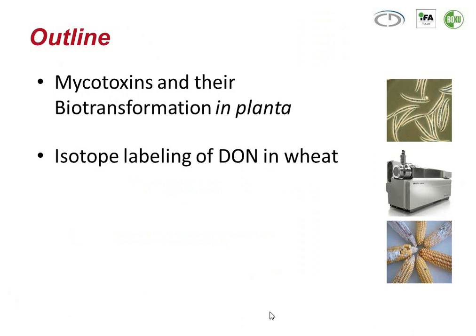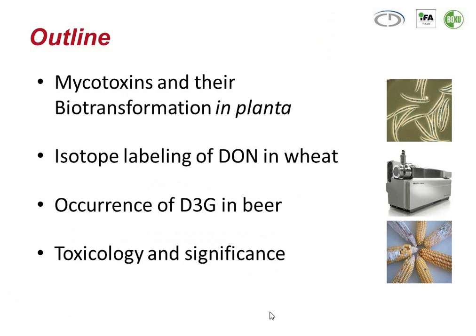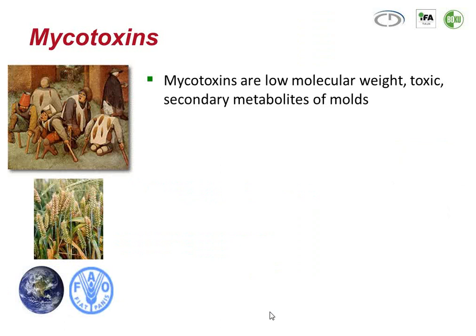They are biotransformation products of mycotoxins in plants. How can we determine and detect masked mycotoxins? I want to present one example of a very sophisticated method to do so. What is the occurrence of a certain masked mycotoxin, the deoxynivalenol-3-glucoside, which is the masked mycotoxin that we currently know the most of? And finally, what about the toxic effects of masked mycotoxins and their significance? I will conclude with a summary.